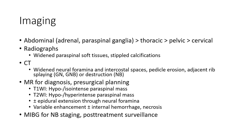MRI is best for diagnosis and surgical planning. T1WI: hypointense to isointense. T2WI: hyperintense. Quadraspinal mass with plus-minus epidural extension. Variable enhancement. Plus-minus internal hemorrhage and necrosis. MIBG is used for neuroblastoma staging and post-treatment follow-up.